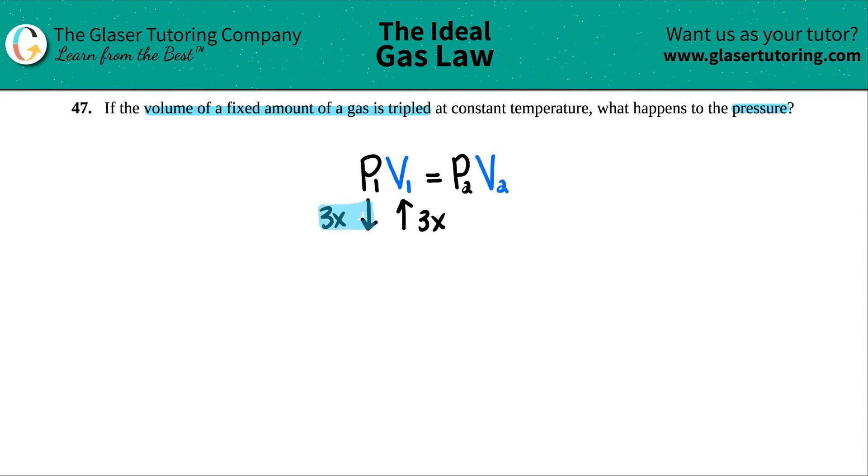And that's basically the answer. Now if I just have to say it somewhere else or in a different way, I will say that the pressure decreases by—you could say three times, or you could say a factor of three. Decreases by a factor of three, or I guess we could say decrease by three times the amount, 3x the amount. And that would be the same thing.